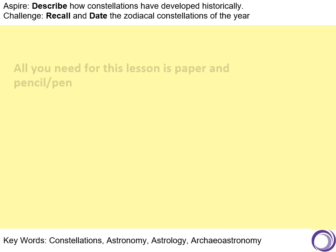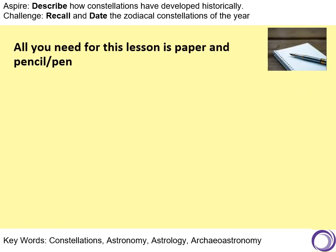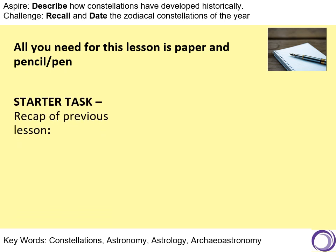So as ever, what do we need for our lesson? Simply a pen and a piece of paper. You will need a ruler because we are going to draw a table in a little bit. And as always with all my lessons, I like to have a recap of our previous learning. So these are four dates you need to put down: 1957, 1969, 1971, and 1977.